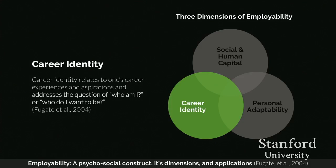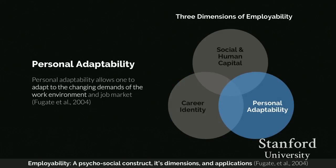Whereas career identity asks who am I or who do I want to be, personal adaptability provides the how to make it happen. Personal adaptability allows one to adapt to the changing demands of the work environment. Individuals who embody personal adaptability have a high propensity to learn and are open to changing environments — for example, massive open online course learners, or those working full-time while going back to school part-time.